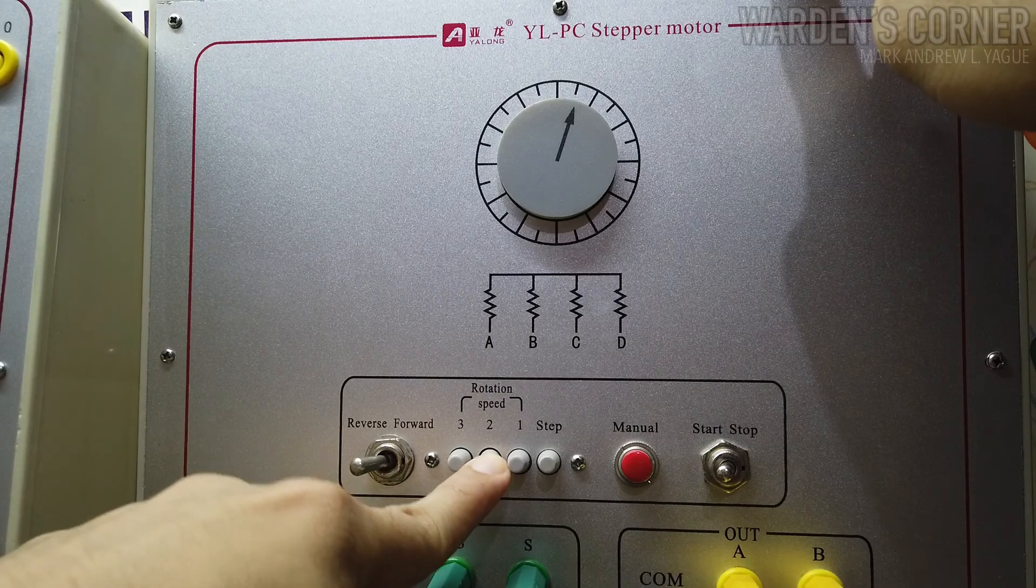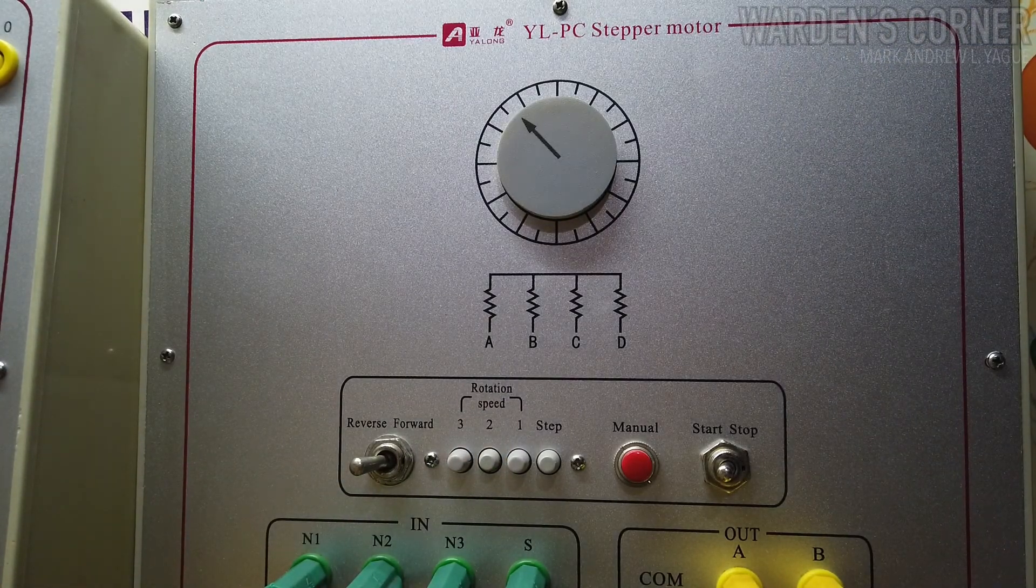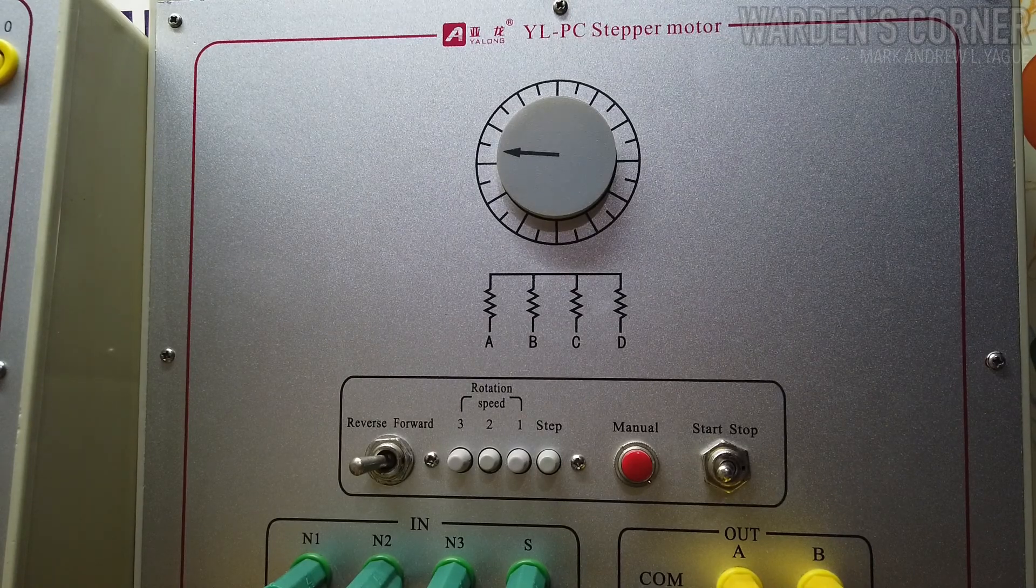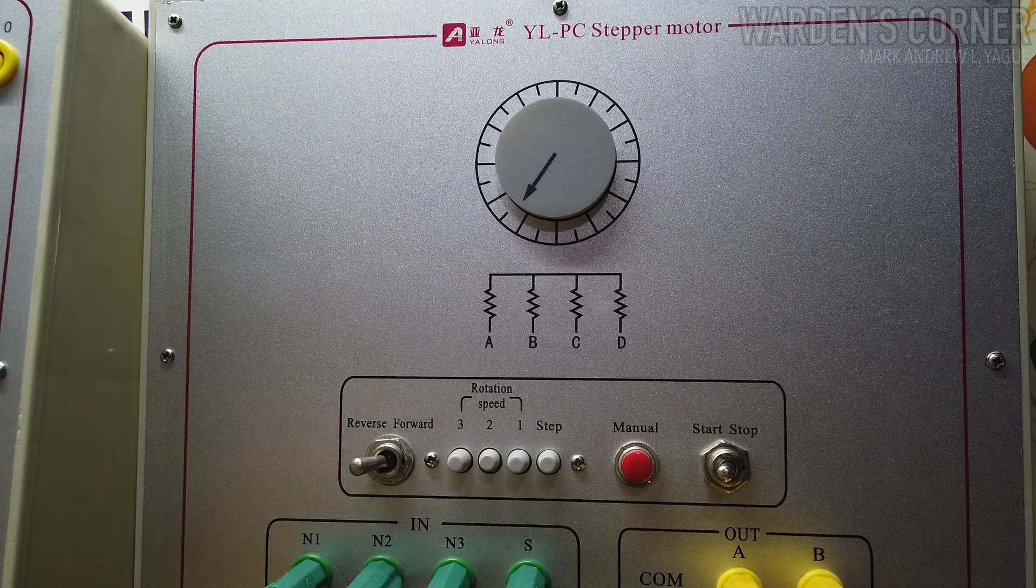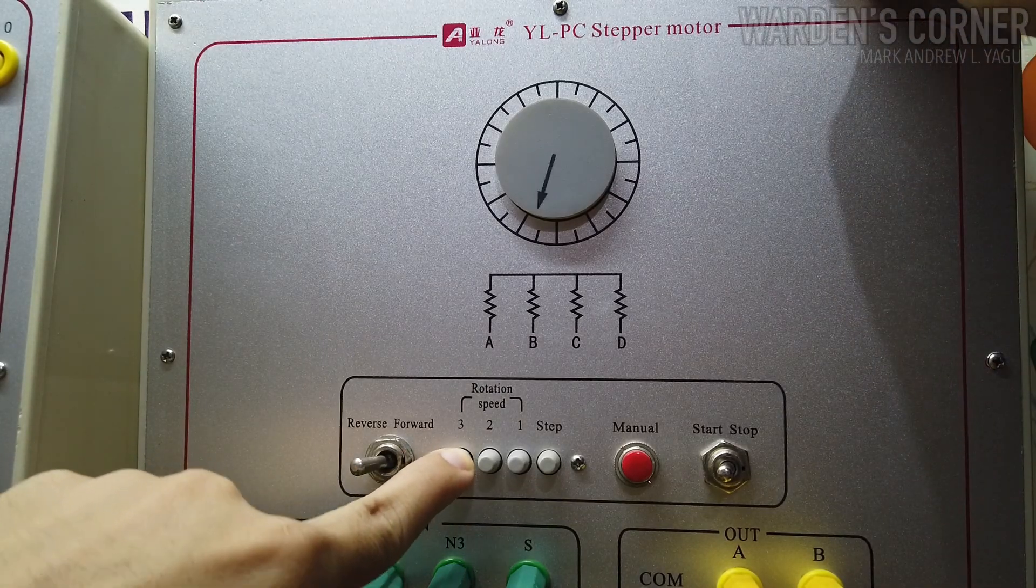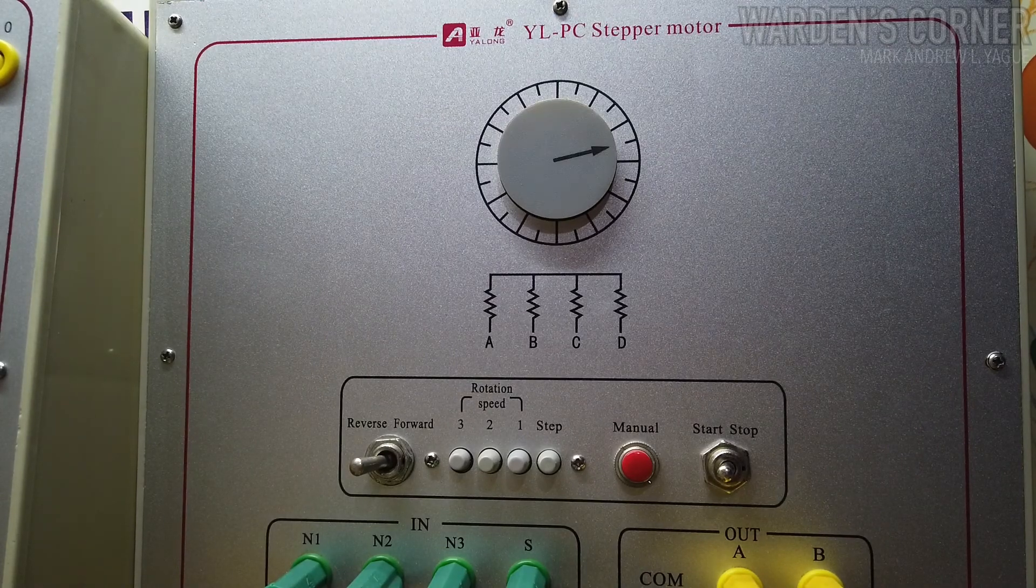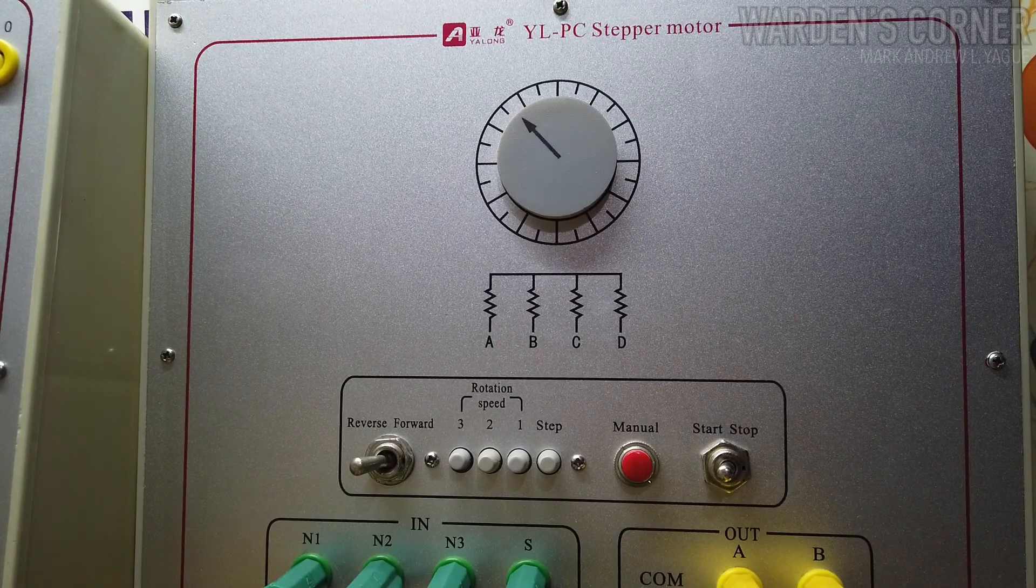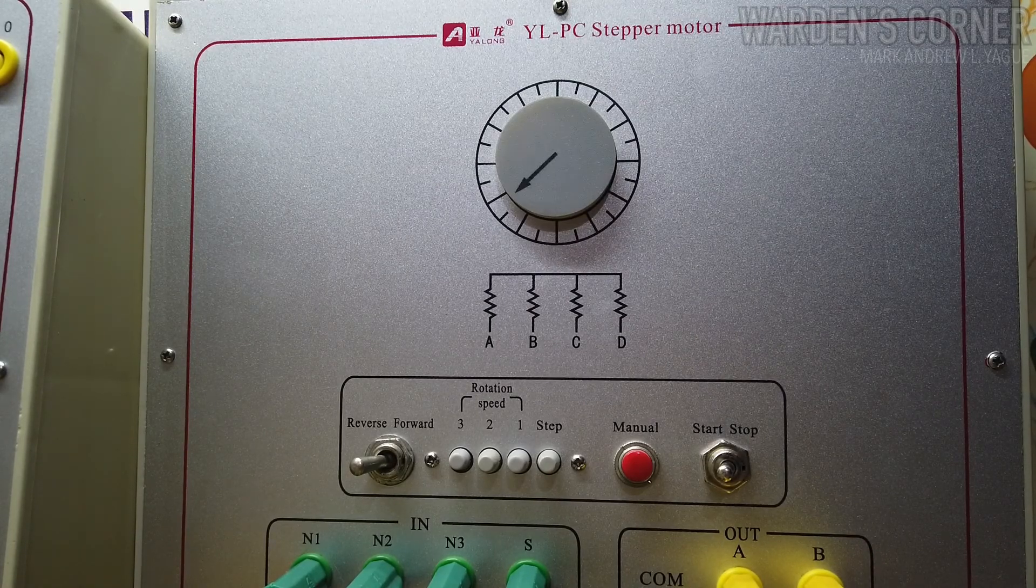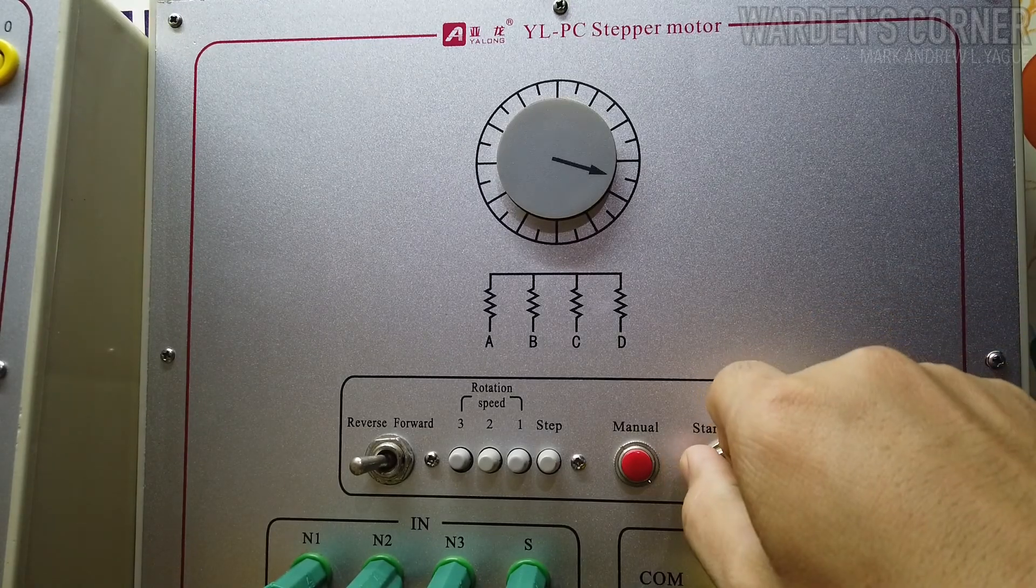Select speed 2, the time interval is at 1 second. Select speed 3, the fastest speed is at 0.5 seconds time interval. And stop the program.